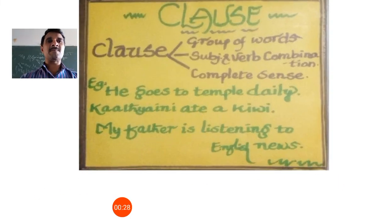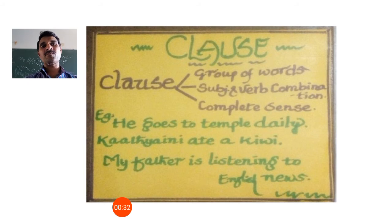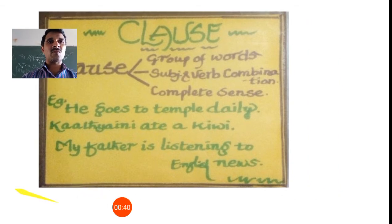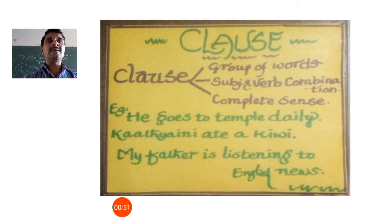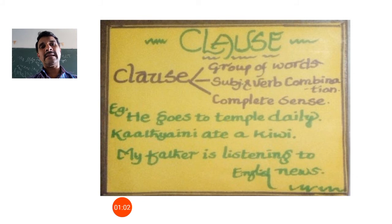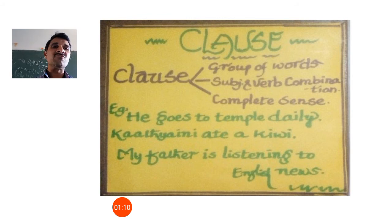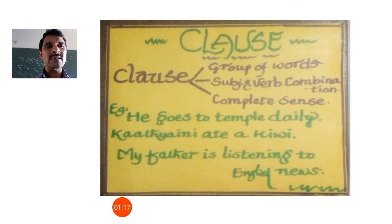What is a clause? A clause is a group of words which has a subject and verb combination and has a complete sense. If a sentence fulfills all three conditions, we call it a clause. For example: 'He goes to temple daily.' Here, 'he' is the subject, 'goes' is the verb — subject-verb combination is fulfilled — and it gives complete sense: he visits a temple every day. So it is known as a clause.